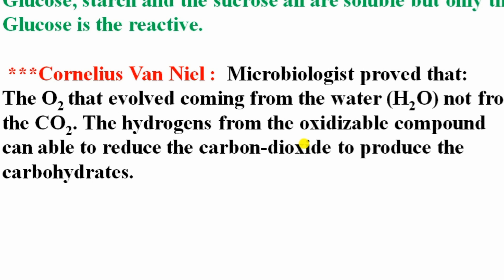Microbiologist Cornelius van Niel proved that the oxygen evolved during photosynthesis comes from water (H₂O), not from carbon dioxide. He showed that the hydrogen from the oxidizable compound — here H₂O — is transferred to carbon dioxide to produce carbohydrates. His experiment is very important: oxygen during photosynthesis is produced from H₂O, and the hydrogen reduces CO₂ to produce glucose.